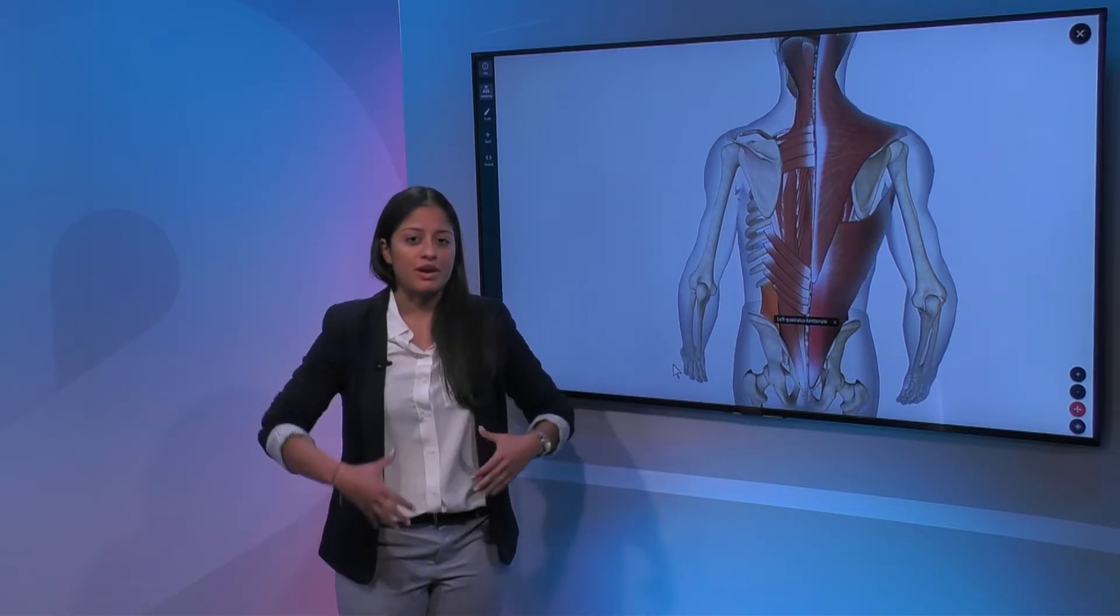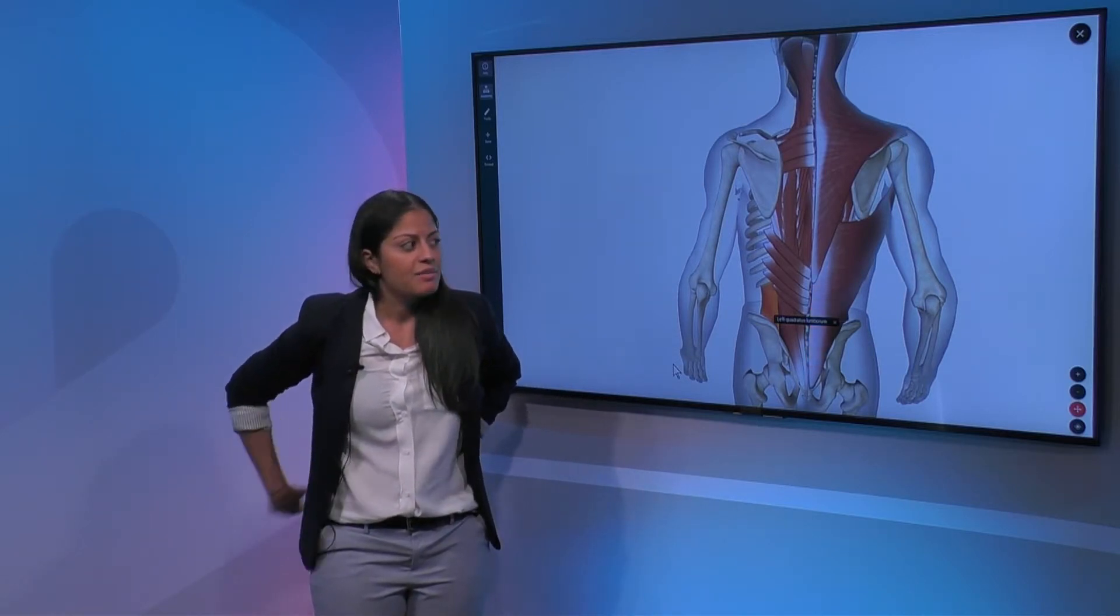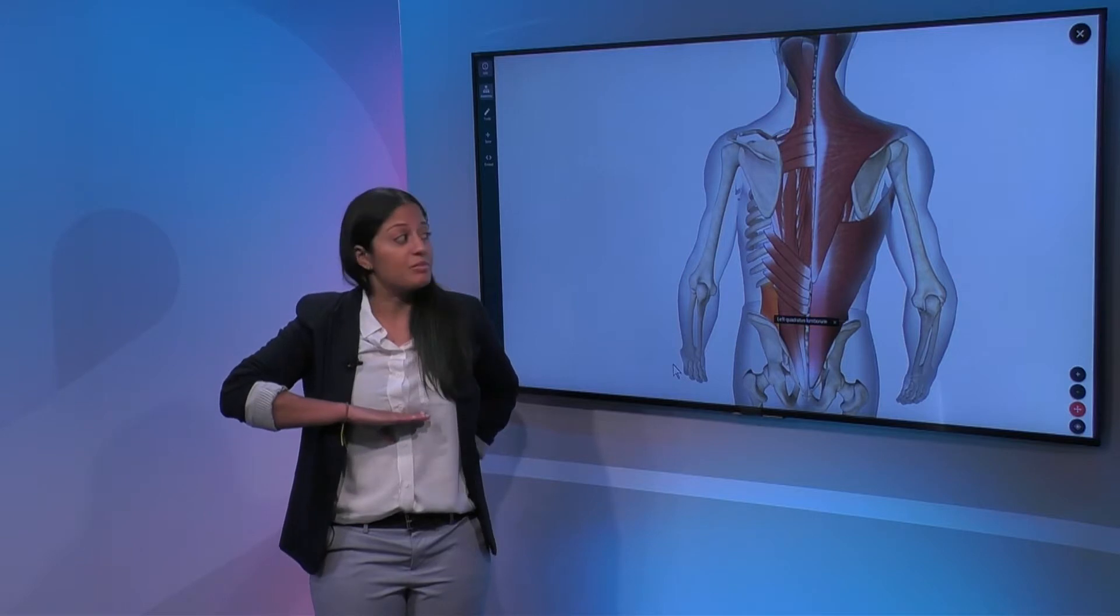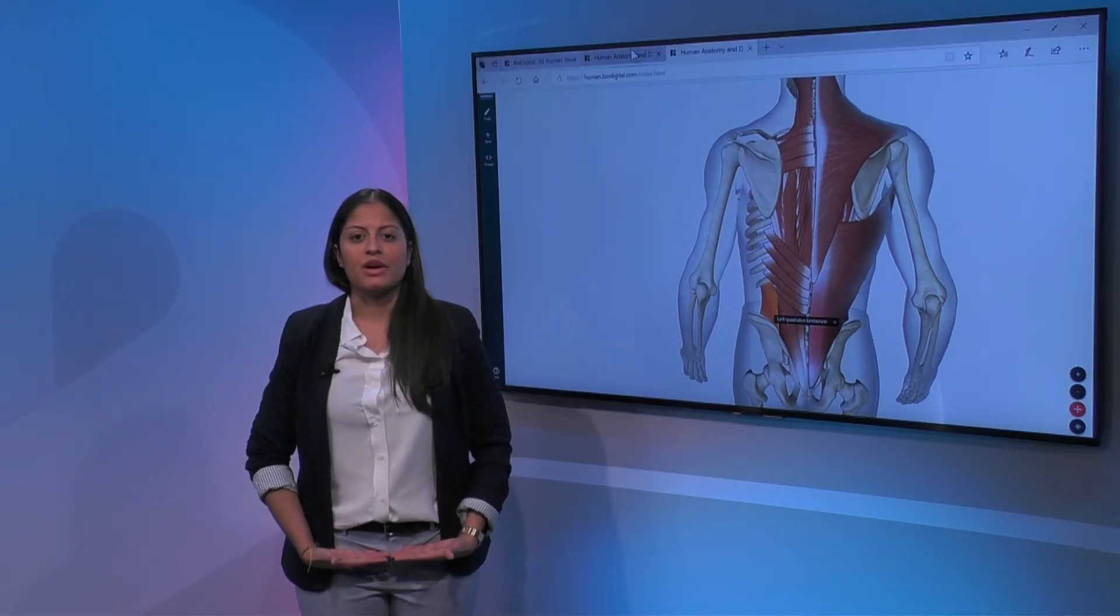So you have muscles in the front, you have muscles in the side, muscles in the back, but also you have from the top your diaphragm which is your breathing muscle, and towards the bottom you have your pelvic floor.